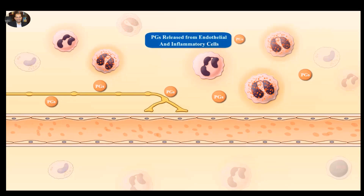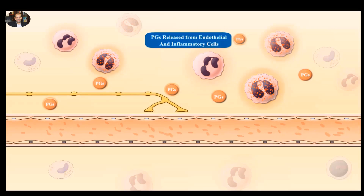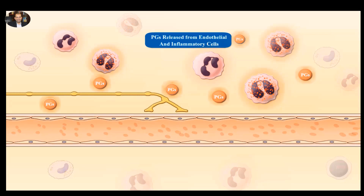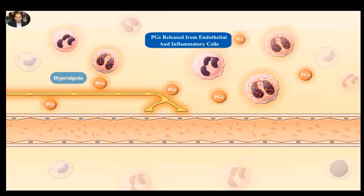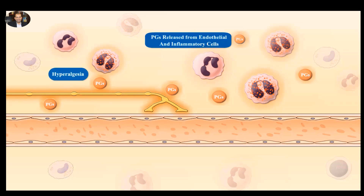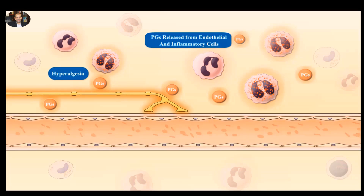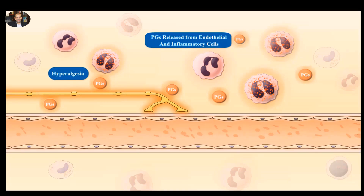Prostaglandins are released from endothelial and inflammatory cells such as macrophages or dendritic cells. They stimulate nerve endings, producing a state of hyperalgesia, which makes nerves more sensitive to painful stimuli.